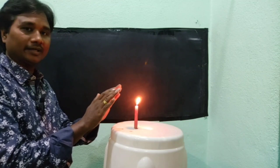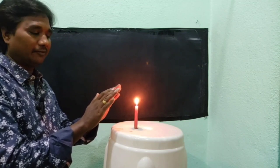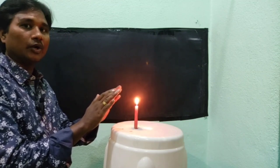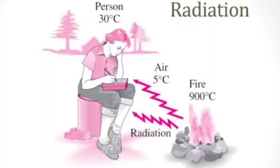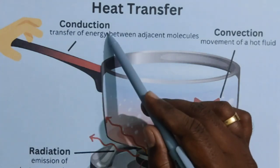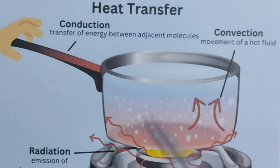Observe this diagram: a person is sitting near a heat source. The person receives heat energy from the heat source by means of radiation, even though the intermediate medium — air — is at a lower temperature than both the heat source and the person's body. This illustrates that different modes of heat transfer — conduction, convection, and radiation — can coexist.